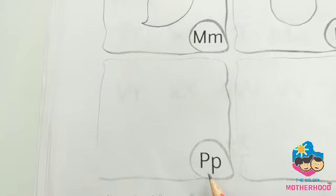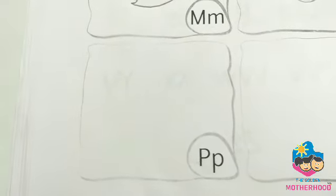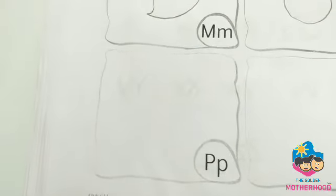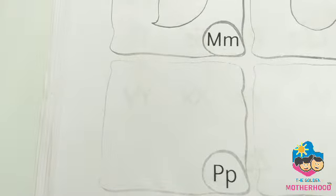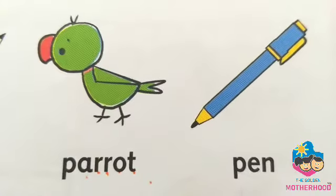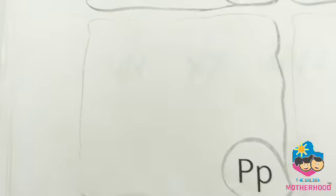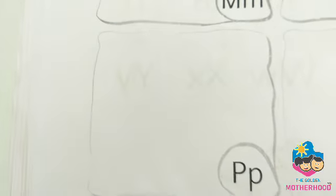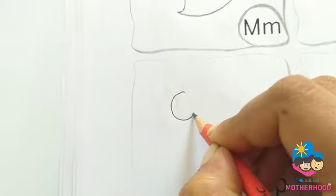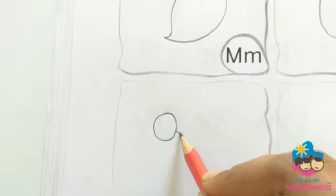This is the letter P. I will give some pictures starting with the letter P: Peacock and Pencil, Parrot and Pen. Here I will draw the picture of a Parrot — P for Parrot.